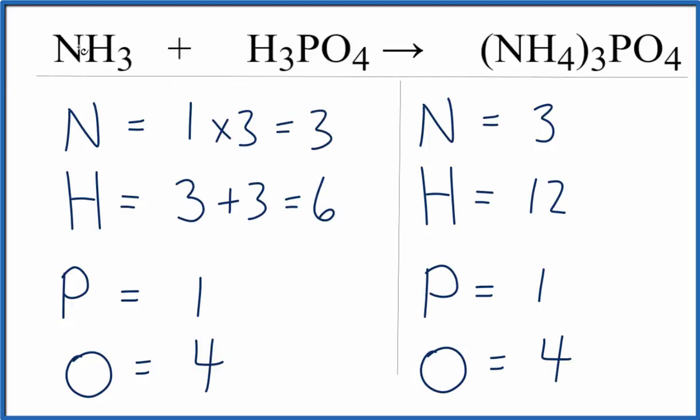That would give me three, so I'll put a coefficient of three in front of the NH3. So now the nitrogens are balanced.